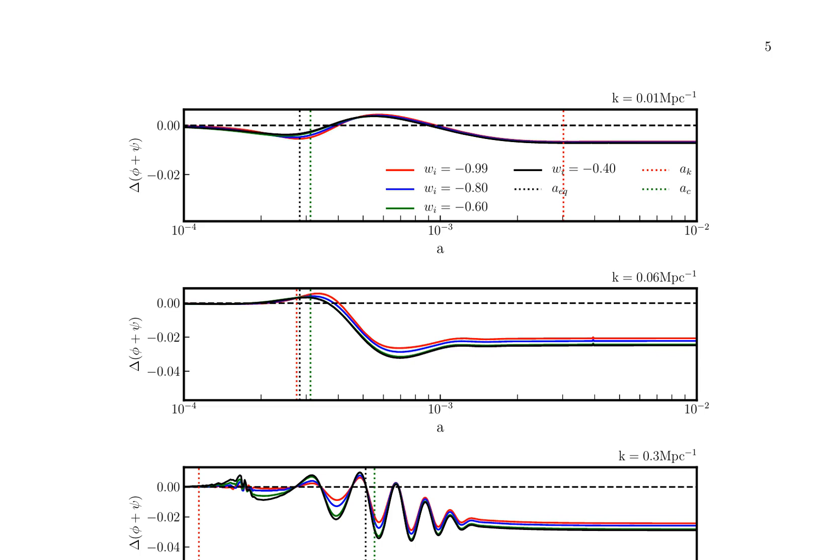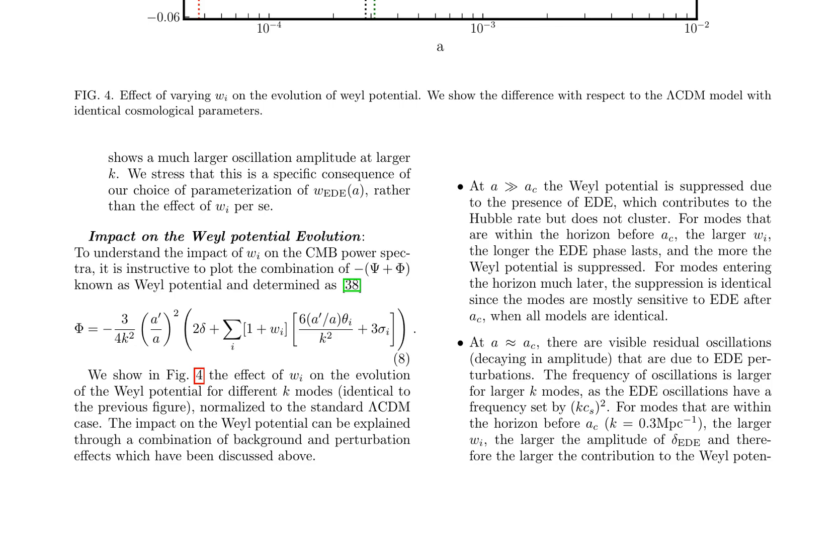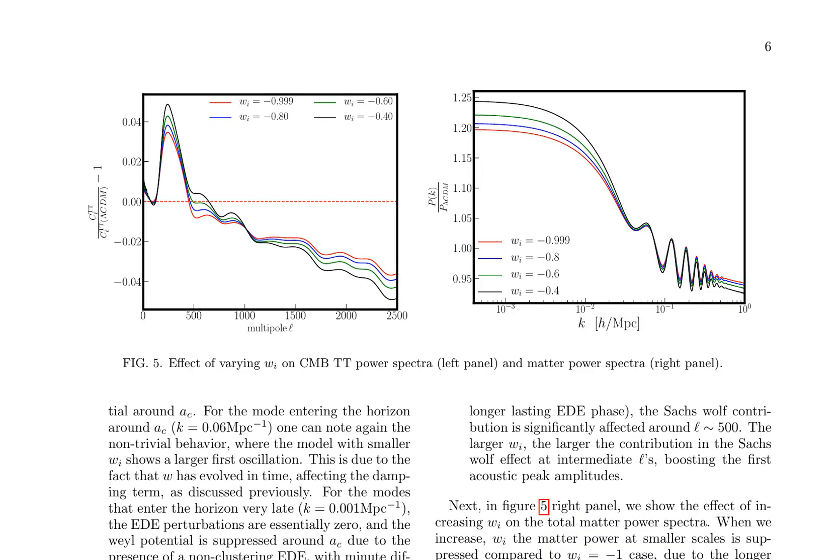Varying the W-parameter has a profound impact on the evolution of the whale potential, particularly in the context of early dark energy (EED) models. By analyzing the effects of W-parameter variation, the authors demonstrate its influence on the Hubble rate and the clustering properties of the universe, leading to distinct oscillations in the whale potential. These oscillations are more pronounced for modes entering the horizon before the onset of EED, where a larger W-parameter results in a longer EED phase and hence greater suppression of the whale potential. Residual oscillations around the time of EED's onset are also observed, decaying in amplitude and becoming more frequent for larger K-modes. This detailed exploration of the whale potential's evolution under varying W-parameters provides crucial insights into the behavior of the universe in the context of EED models.